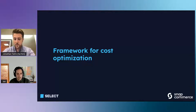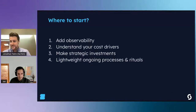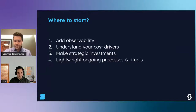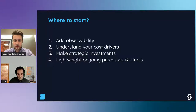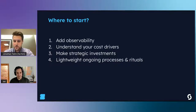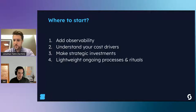Here's a straightforward framework for cost optimization that we've both had success applying. The first two things you need to do are add observability so you can understand what your cost drivers are - you need to be grounded in knowing what the biggest drivers of your bill are so you know where to focus your time. Once you have that, you can make strategic investments based on how much time something will take to fix relative to the money you'll save. Finally, we recommend instilling some lightweight processes and rituals to keep tabs on things.